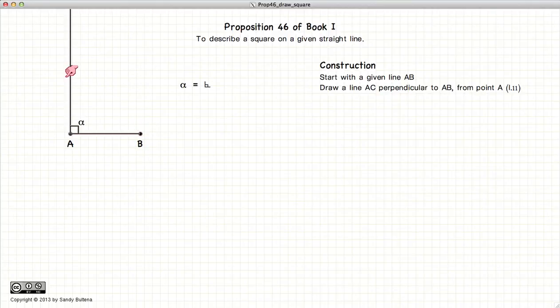Now we are going to define a point D such that AD is equal to AB using the methods described in Proposition 3.